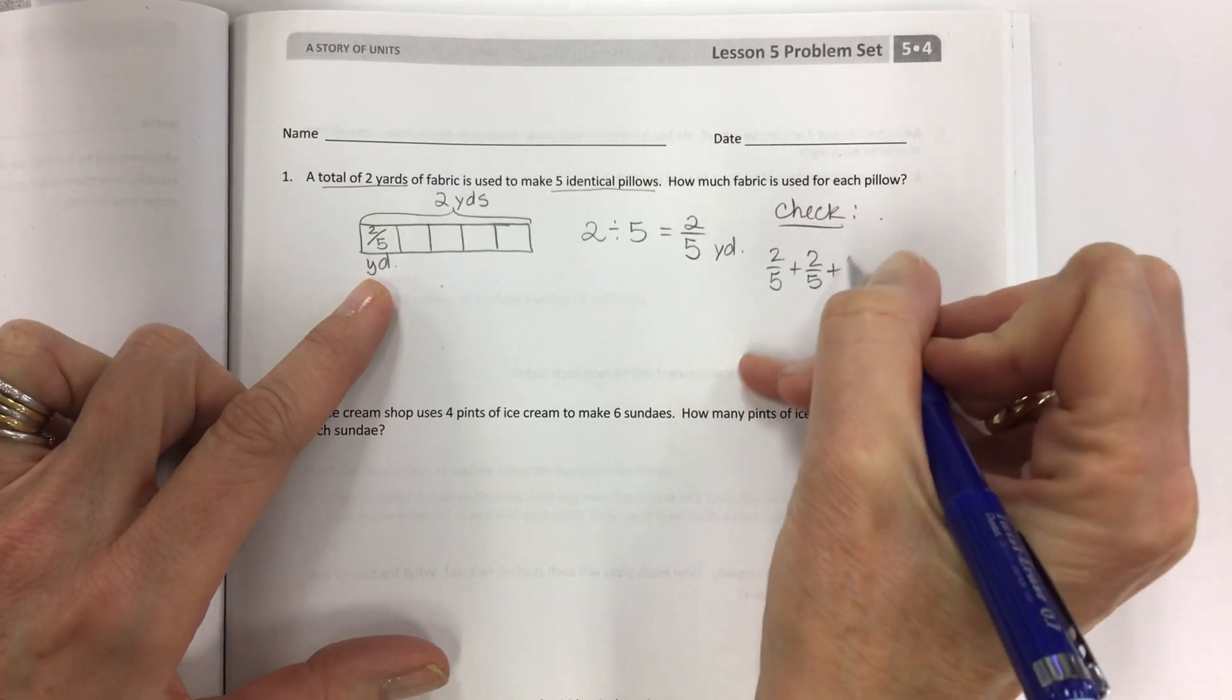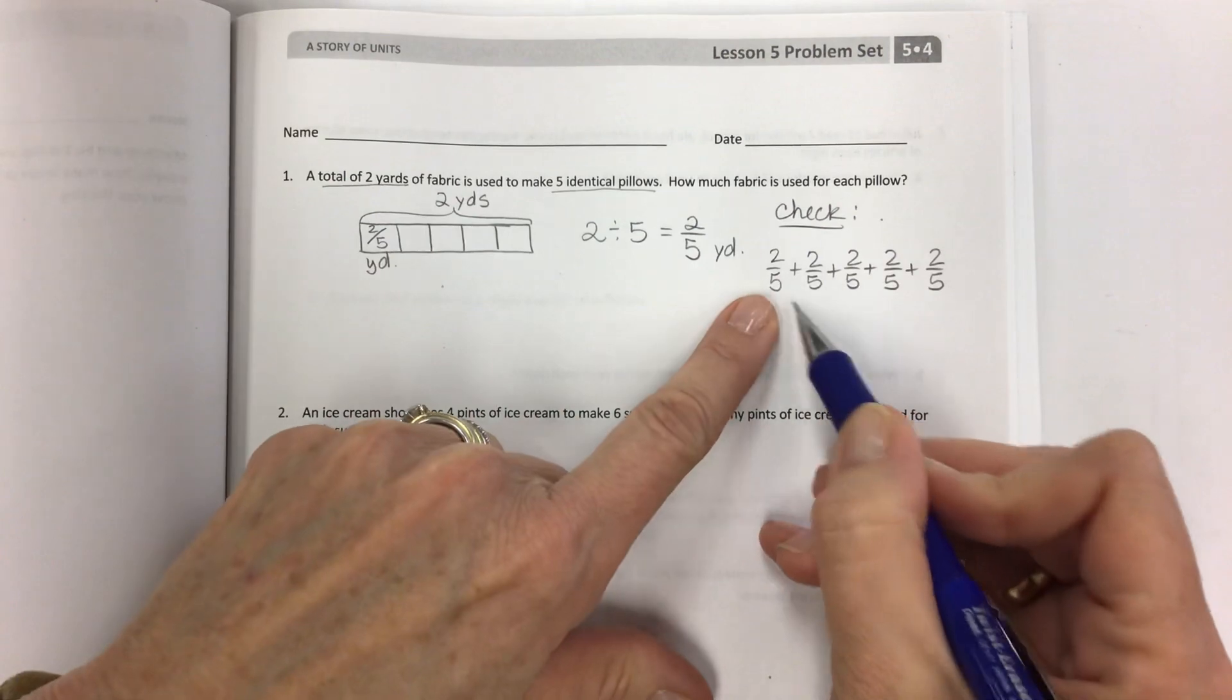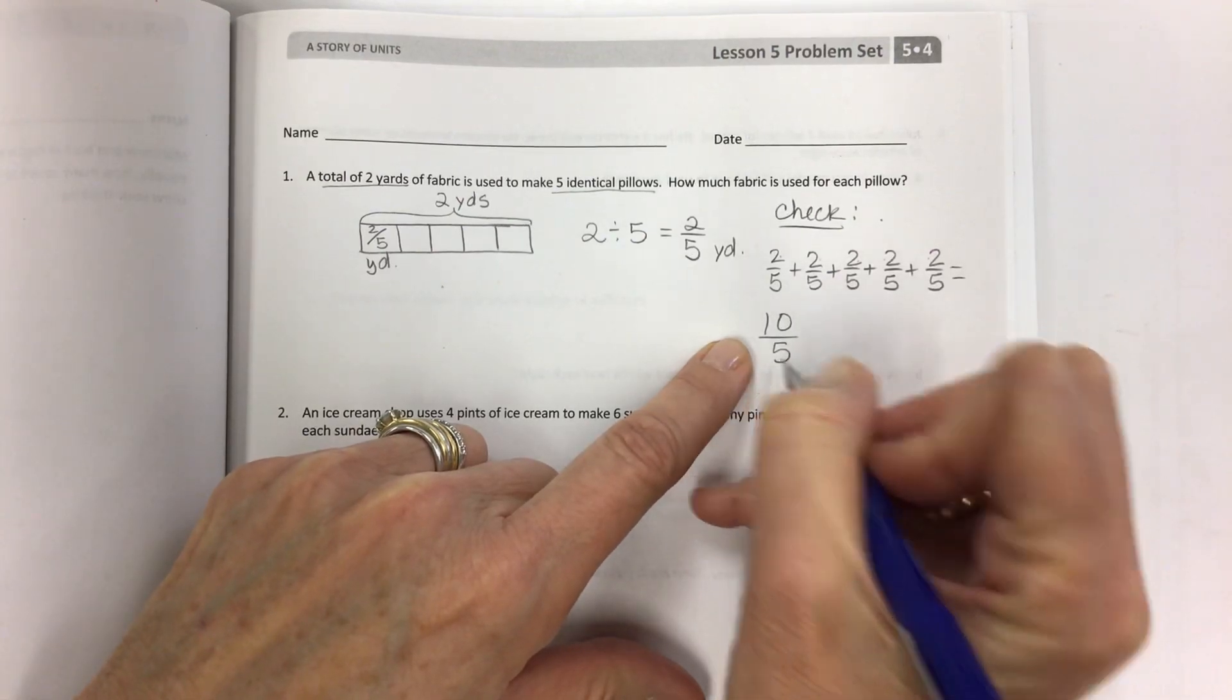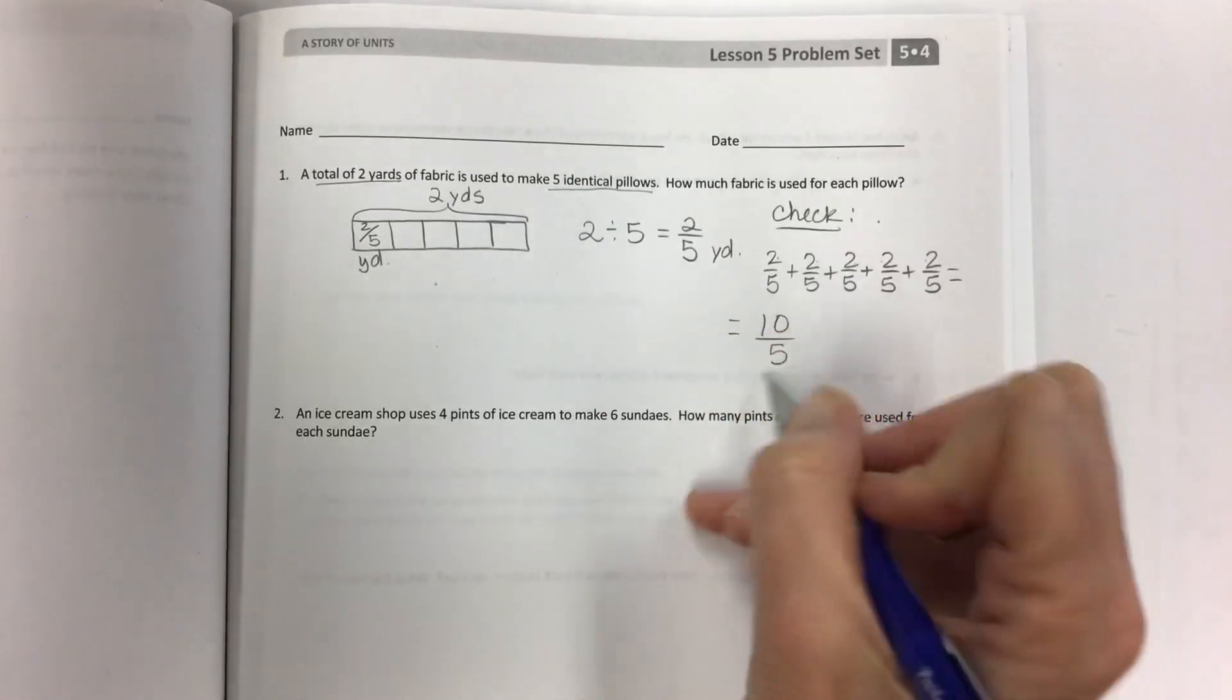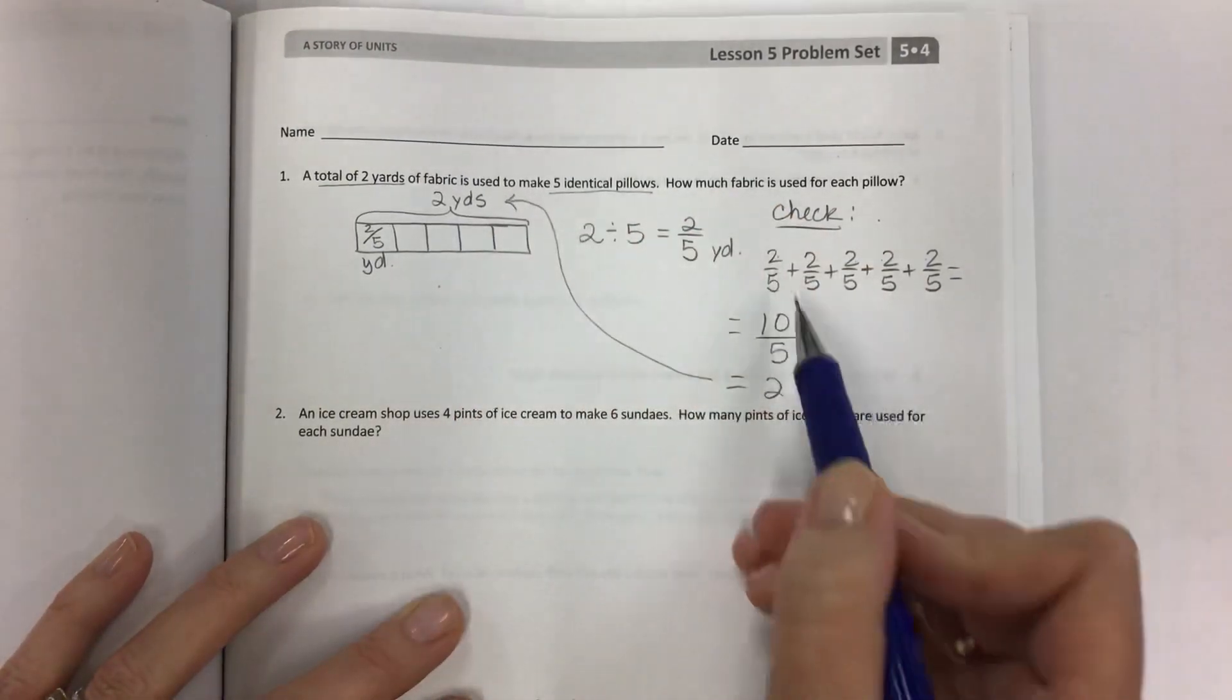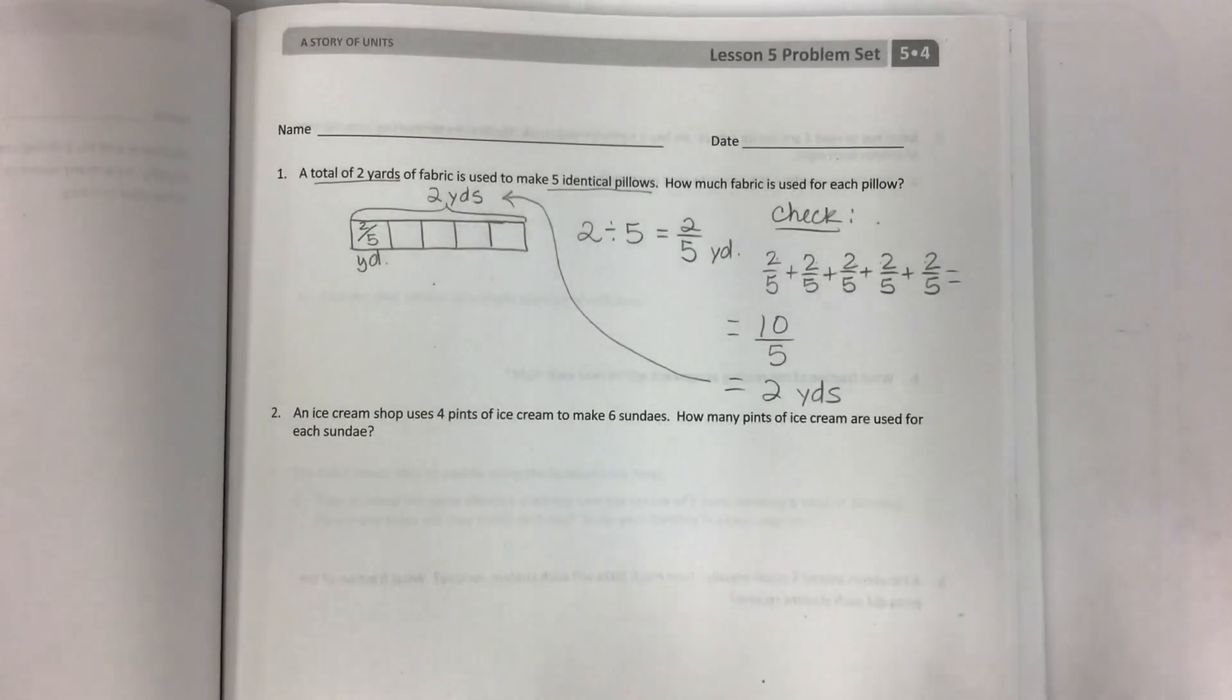Since we're not multiplying, we're adding because we haven't really gone over that yet. If I have two-fifths five times, I have 2, 4, 6, 8, 10, which is 10 over 5, which is really two because this is a division problem. This shows me that yes, I have the same number that I started with.